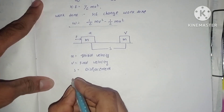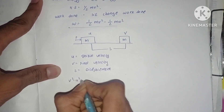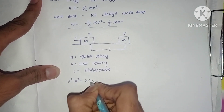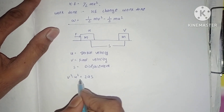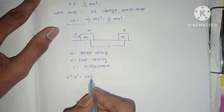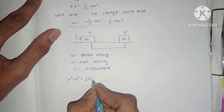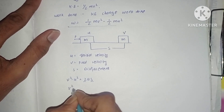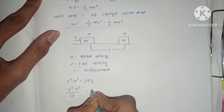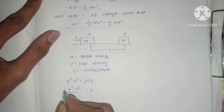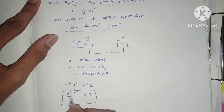We know the kinematic formula: v² − u² = 2as. Rearranging, we get the acceleration a = (v² − u²) / 2s.